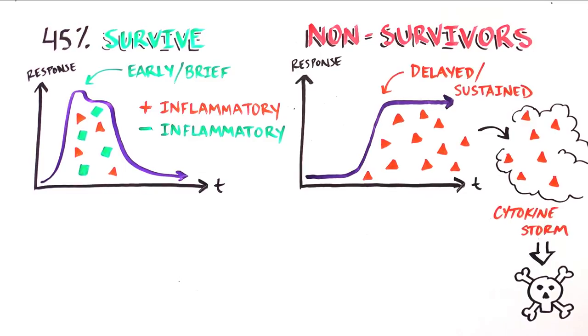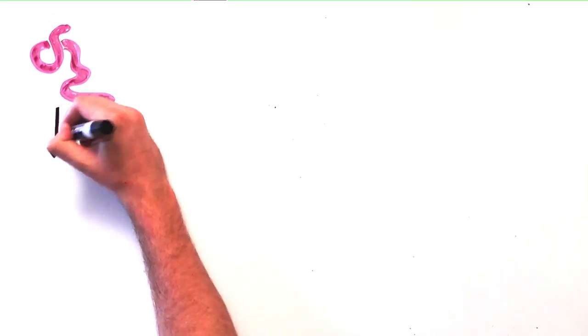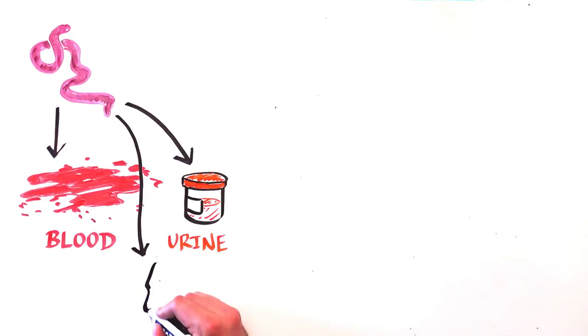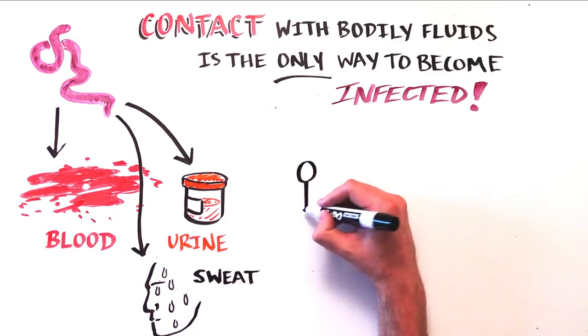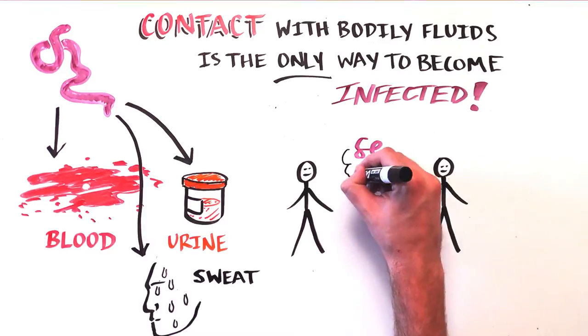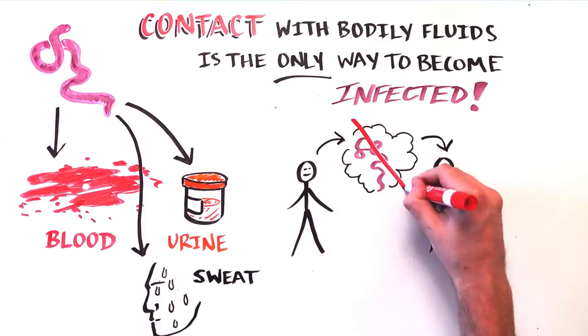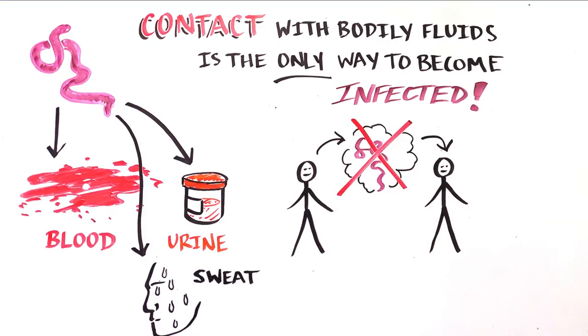The Ebola virus is present in bodily fluids such as blood, urine, and sweat. Contact with an infected person's bodily fluids after symptoms appear is the only way to become infected with Ebola. Ebola cannot survive while floating in the air as the flu virus can, so it can't travel very long distances.